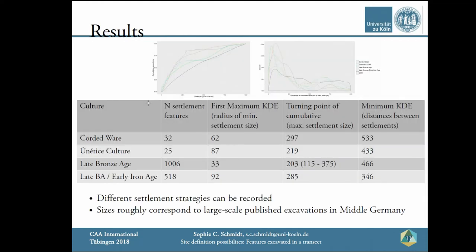The 32 features of the Corded Ware culture are loosely scattered in clusters of about 120 meters in my transect. At 300 meters, the distance to the next features rises rapidly, and as a distance between settlements I propose about 530 meters. There is only one site in Middle Germany I could find for comparison — in Thuringia, called Lukau Forst — which revealed house stats of the Corded Ware distributed in a triangle with a site length of about 125 meters, which fits quite well with my results, though the houses there are much closer to each other than the features in my transect.